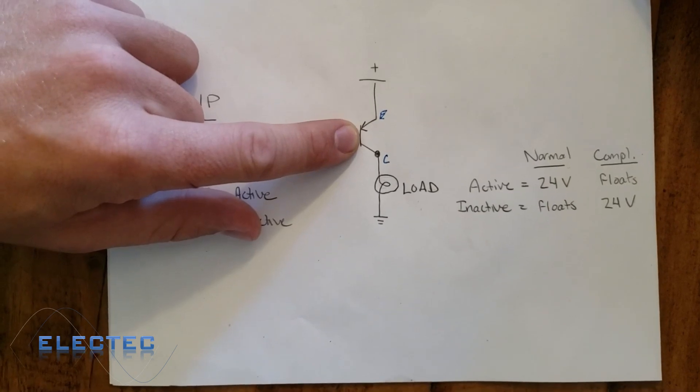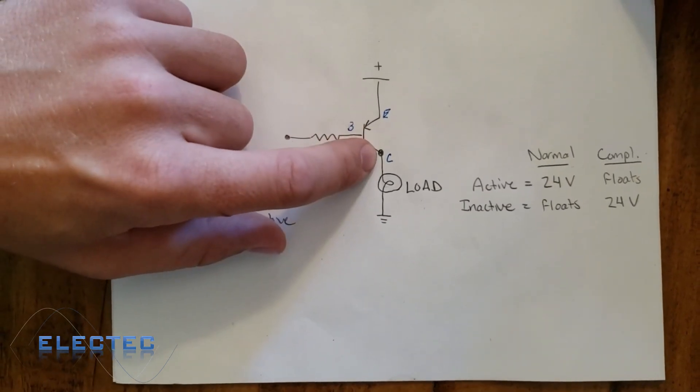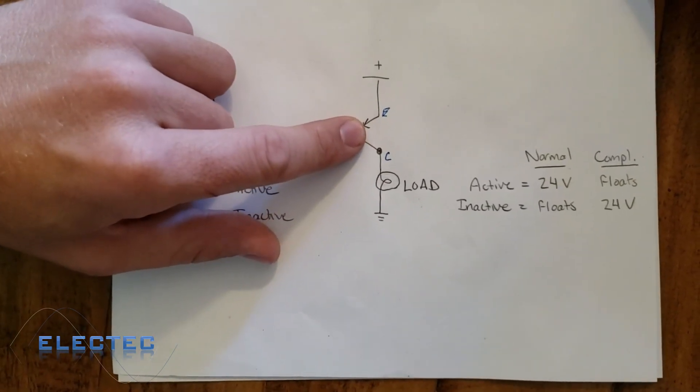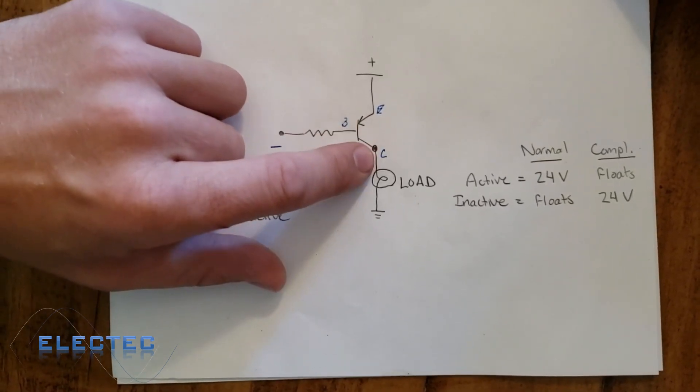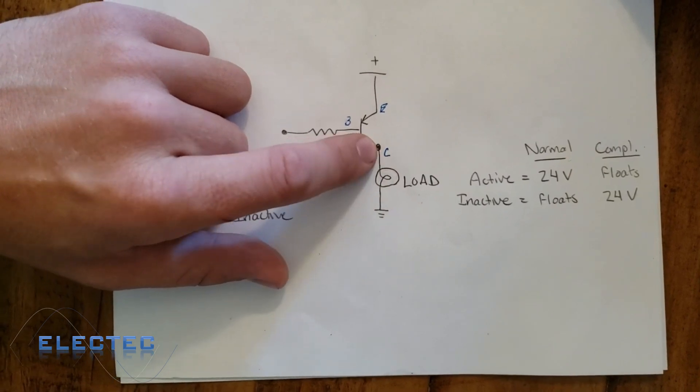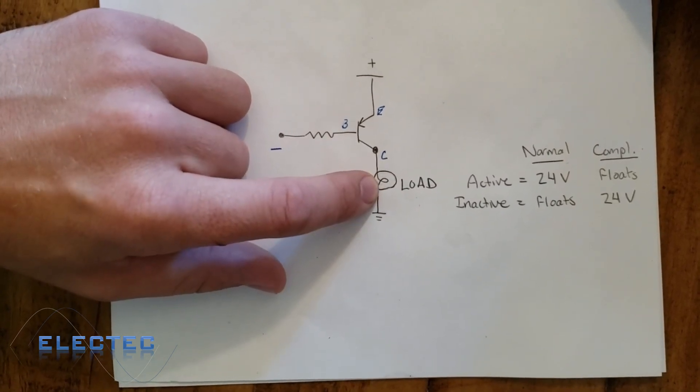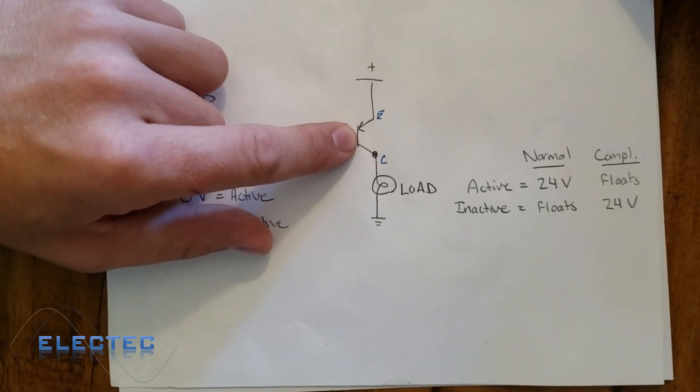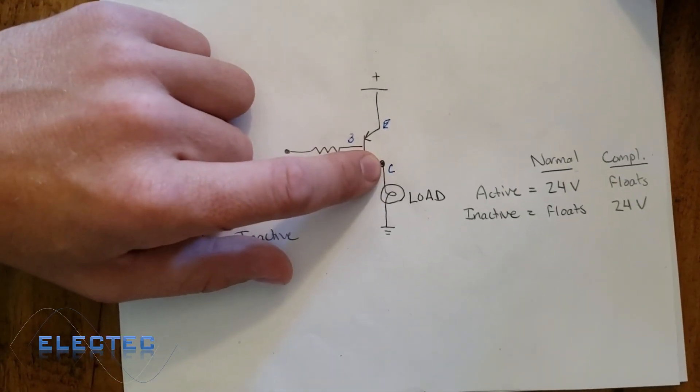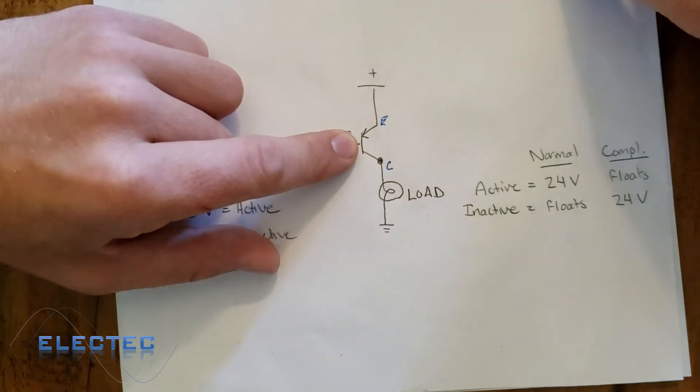So what it essentially does is when it's active, it turns this collector point to a source, which would be your positive voltage rail, or in most cases, 24 volts. So what it does is it turns your load, if you need a load that needs 24 volts, and one side of the load is already at a neutral potential or at a negative potential, it turns this point to whatever your positive rail is.